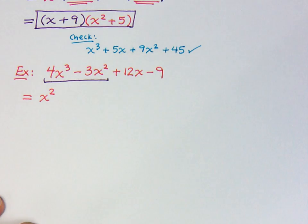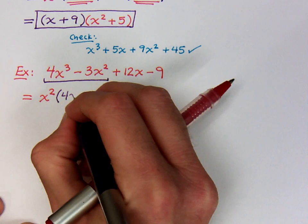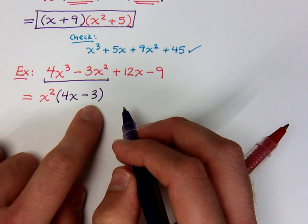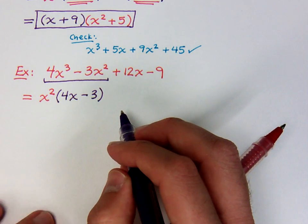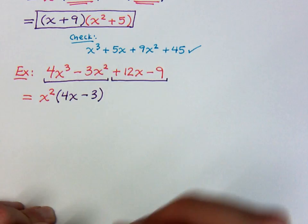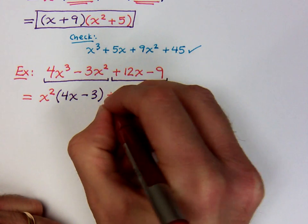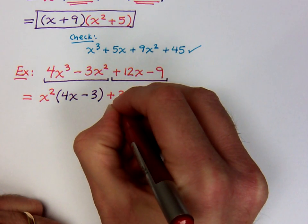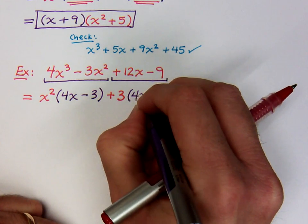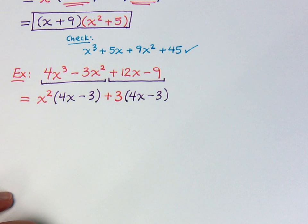So I'm going to factor out x squared. If I take x squared out of this first term, I have 4x. If I take x squared out of the second term, I have minus 3. Do these guys have anything else in common? No, they don't. So we should feel pretty good about what we have. Then we move on to the second group: plus 12x minus 9. They don't have any x's in common, but 12 and 9 do have a common factor of 3. And remember, this sign goes right here. So that's a plus 3 that you're factoring out.